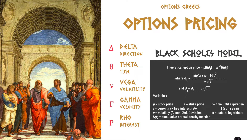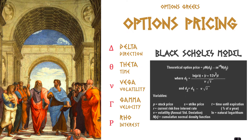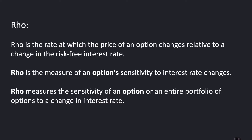You'll recall that the options pricing model is known as the Black-Scholes model, and there are a lot of variables in it. You've got your delta, your theta, your vega, your gamma. And of course, in this video we are focusing on Rho, which has to do with interest rates.